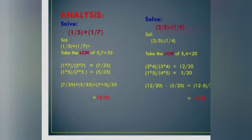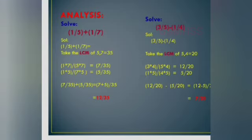Now let us try 1/5 plus 1/7 where the denominators are different. First, find the LCM of 5 and 7. Second, find the equivalent fraction. Third, simplify by adding or subtracting. The LCM of 5 and 7 is 35. So 1/5 becomes 7/35, and 1/7 becomes 5/35. Now the denominators are the same.